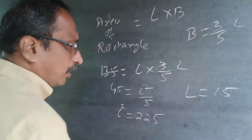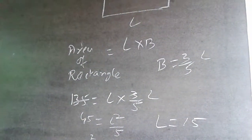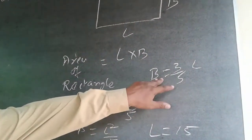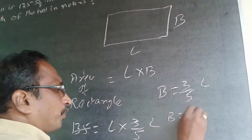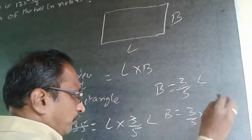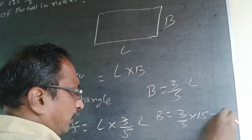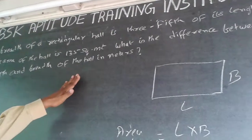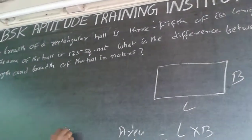L will be equal to plus or minus 15, but we take only the positive value, so L = 15. Then B = (3/5) × 15 = 9. The difference between the length and breadth is 15 minus 9, which is 6.